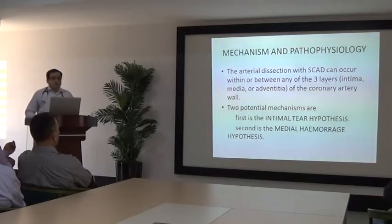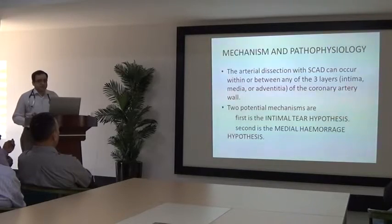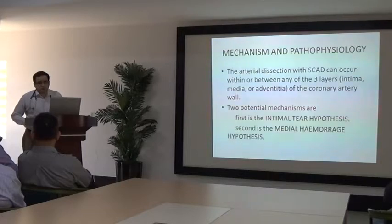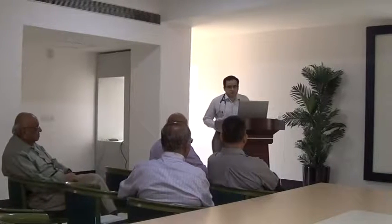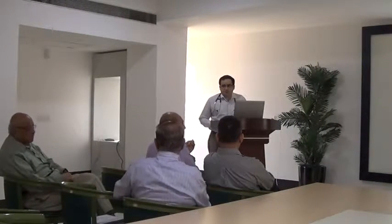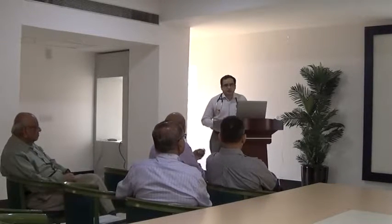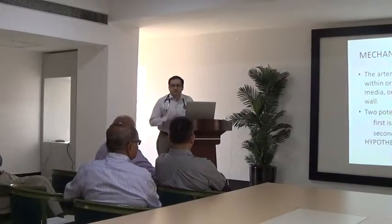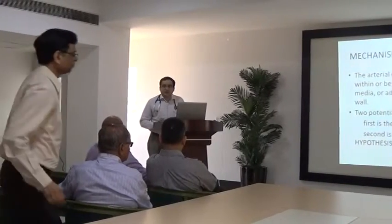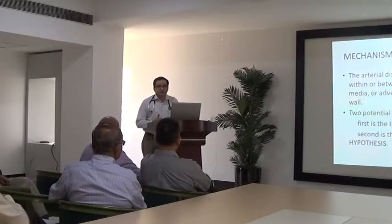Coming to mechanism and pathophysiology, the arterial dissection in SCAD can occur within or between any of the three layers — intima, media, and adventitia. There are two potential mechanisms. First, the intimal tear hypothesis, in which a primary disruption at the intimal-medial interface creates an entry point for intramural hematoma formation. Second, the medial hemorrhage hypothesis, in which hemorrhage in the arterial wall from vasa vasorum rupture is the primary mechanism. Japanese operators routinely use IVUS and OCT for all cases including pre- and post-PCI assessment.